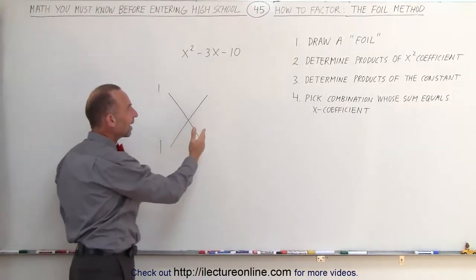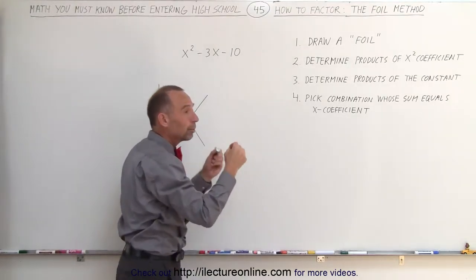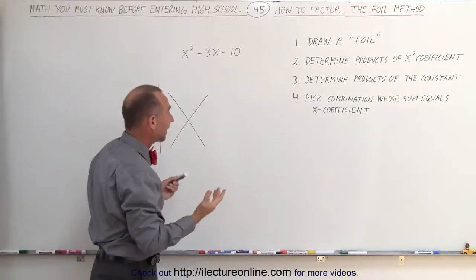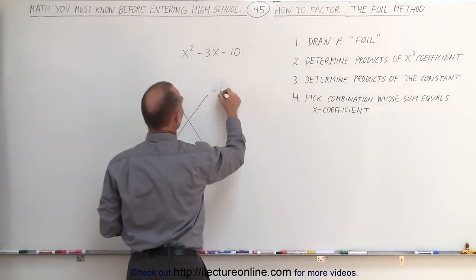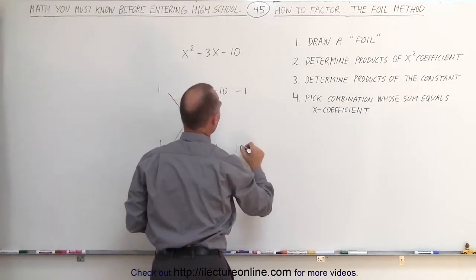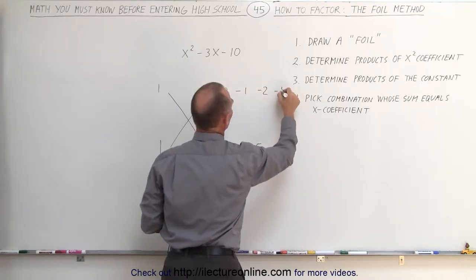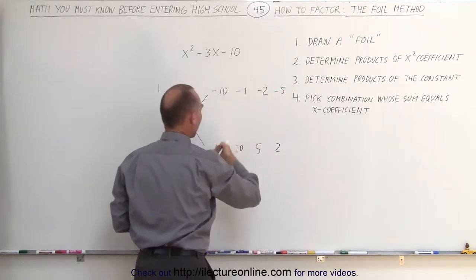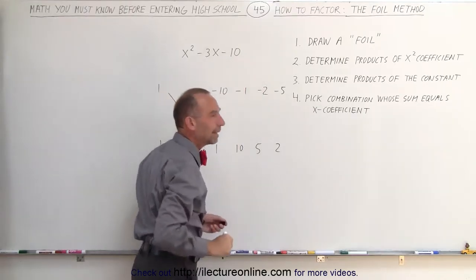Then on the right side, you want to draw all the various combinations that can give you minus 10 when you multiply the two numbers together. Now in that case, there's four different combinations. We have a minus 10 and a 1, or a minus 1 and a 10. We can also have a minus 2 and a 5, or a minus 5 and a 2. Those are all the various combinations. When you multiply these two numbers together, we can get a negative 10.